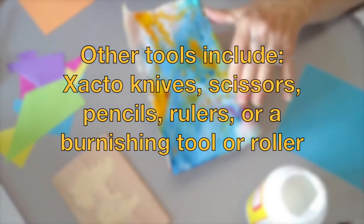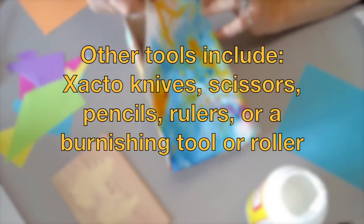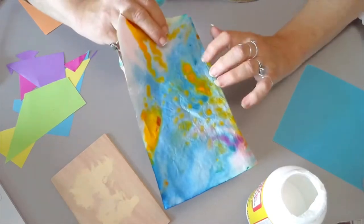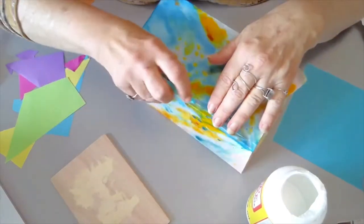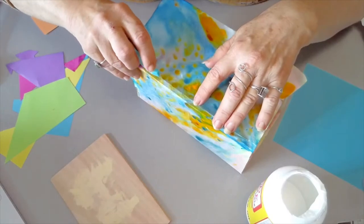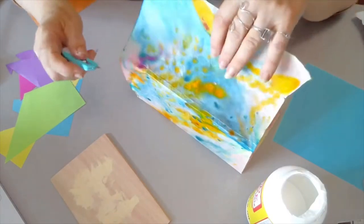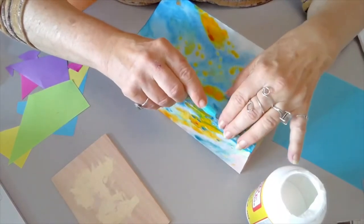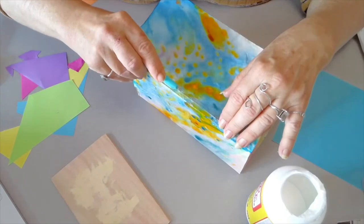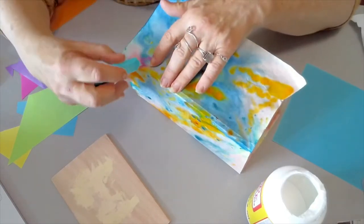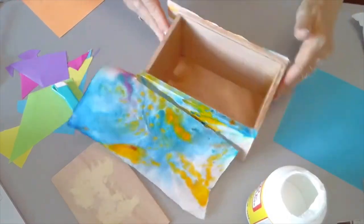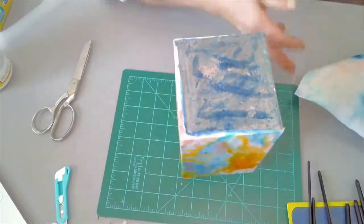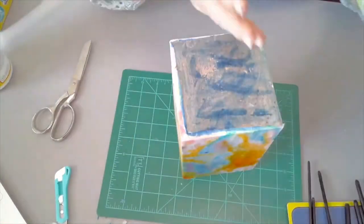Other tools you may need are exacto knives, scissors, pencils, rulers, or a burnishing tool or roller of some sort to make it nice and even when you put the paper on. It all depends what your project includes. It's all very individual. If you like to have newspaper or napkins, you're going to need more careful application tools. If all you're doing is regular 20 pound bond paper, you won't need it.